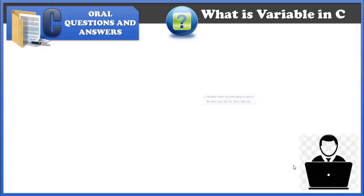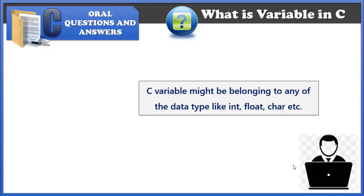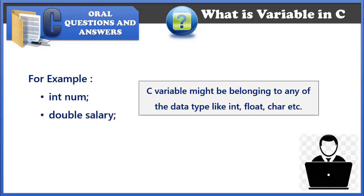So the value of a variable changes during execution of the program. A C variable can be of any type like int, float, char, double, etc. For example: num is a variable of type integer, salary is a variable of type double, avg is a variable of type float, and ch is a variable of type character.